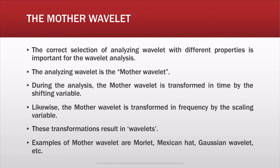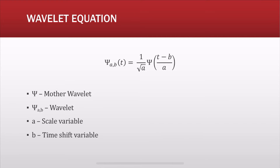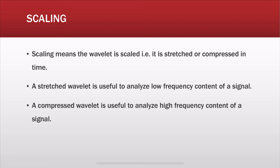Examples of mother wavelets include the Morlet wavelet, Mexican hat, and Gaussian wavelet. This is the wavelet equation: C represents the wavelet, A is the scaling variable in the frequency domain, and B is the time shift variable in the time domain. Scaling means that the wavelet is scaled — that is, it is stretched or compressed in time.